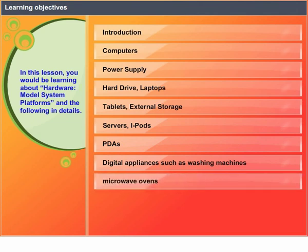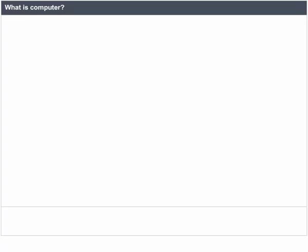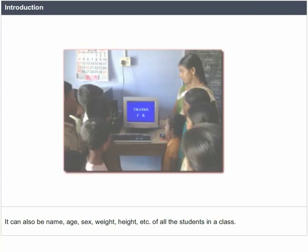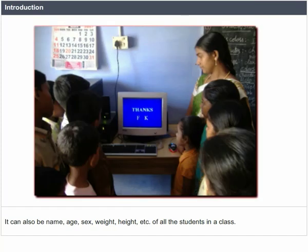What is a computer? A computer is basically a device. It transforms data into meaningful information. Data can be anything like marks obtained by you in various subjects. It can also be name, age, sex, weight, height, etc.